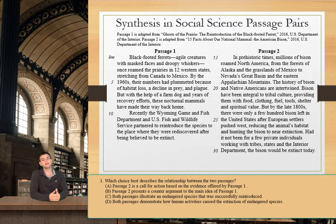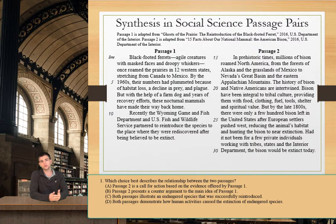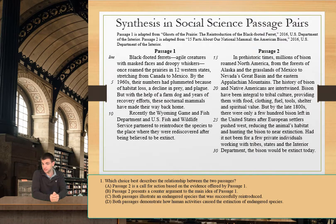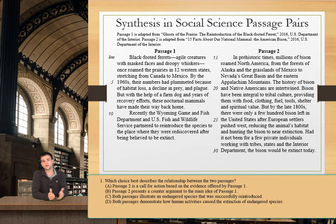Let's keep that in mind as we go through each of our answer choices. Choice A tells us that passage two is a call for action based on the evidence offered by passage one. However, each of these passages really just describes the process of the species going from its large range to being nearly extinct and then being successfully reintroduced. Nowhere in either passage is there a call for action, so we will eliminate choice A.